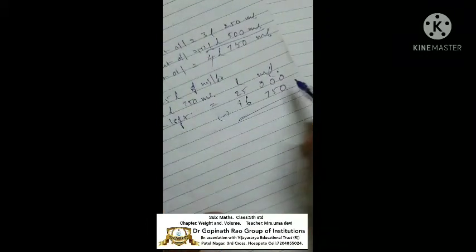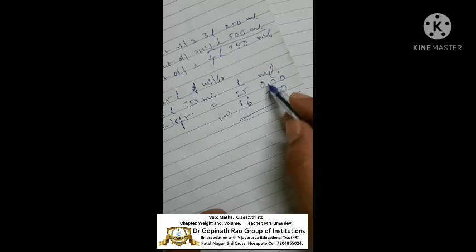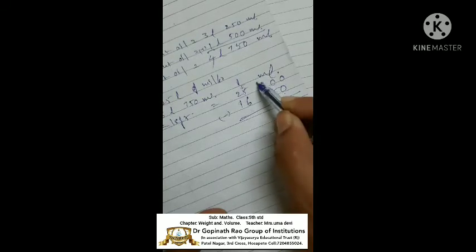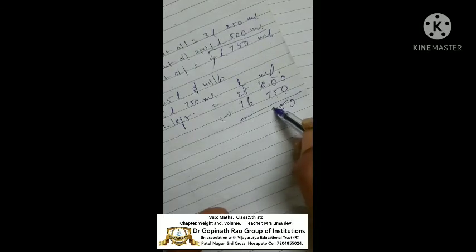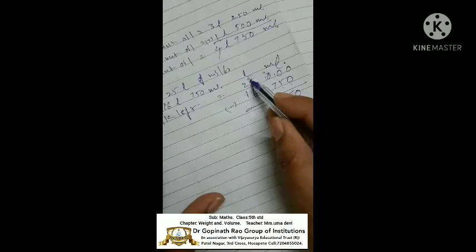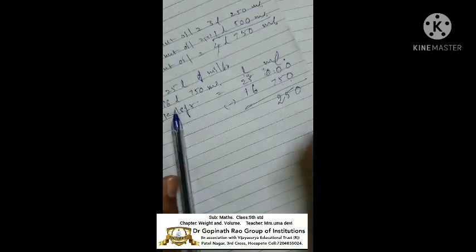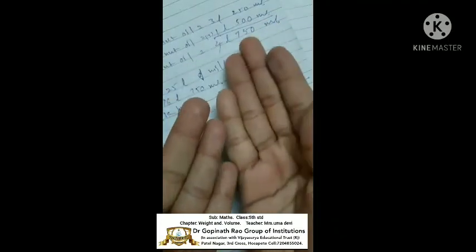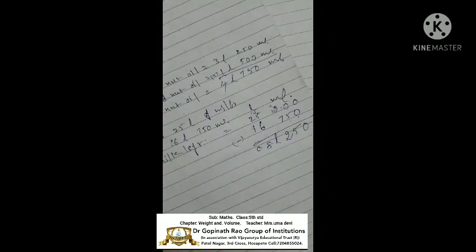Using subtraction: 0 minus 0 equals 0. Here 5 is there, and 0 is there — so take a borrow. It comes to 4; here comes to 10; comes to 9; here comes to 10. 10 minus 5 equals 5. 9 minus 7 equals 2. Here also 4 is small, 6 is big — take a borrow. 6 after: 7, 8, 9, 10, 11, 12, 13, 14 — which number? 8. 1 minus 1 equals 0. Answer: 8 liters 250 milliliters of milk left.